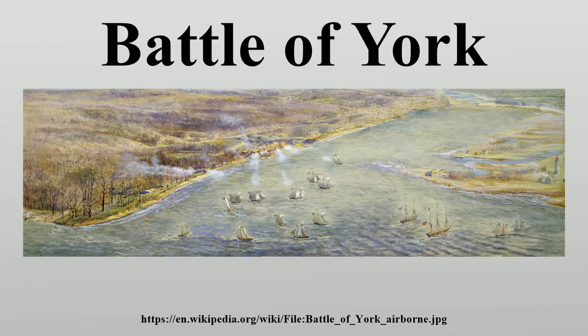However, no decisive action was possible before the onset of winter, during which the ships of both sides were confined to harbour by ice. To match Chauncey's ships, the British laid down a sloop of war at Kingston, and another in the dockyard at York. This vessel was named Sir Isaac Brock after the general, who had been killed at the Battle of Queenston Heights the previous October.